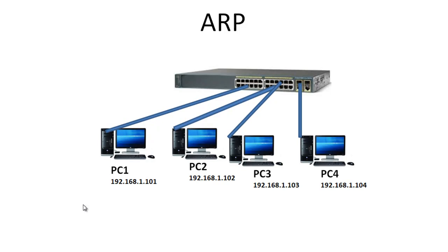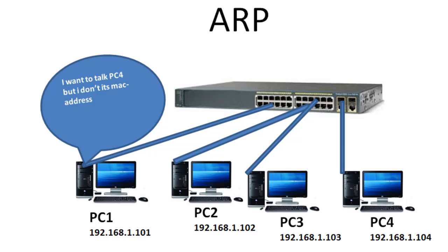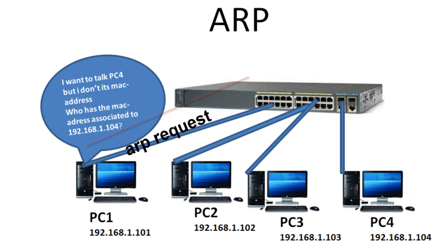In this example I have a switch connected to four PCs. Let's assume we just set up this local area network. If PC1 wants to talk to PC4, PC1 will say 'I want to talk to PC4 but I don't have its MAC address,' so it's going to ask 'who has the MAC address associated to PC4?' using PC4's IP address. PC1 will send an ARP request asking for PC4's MAC address.